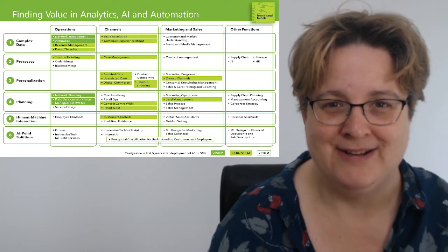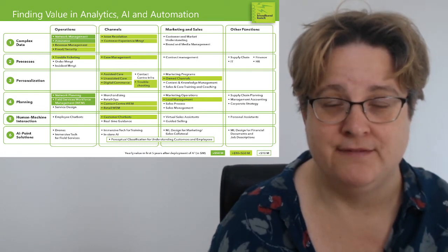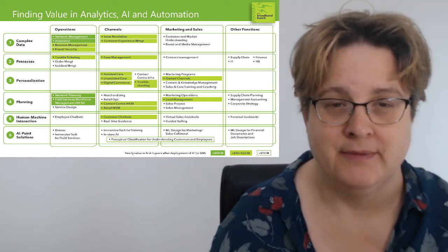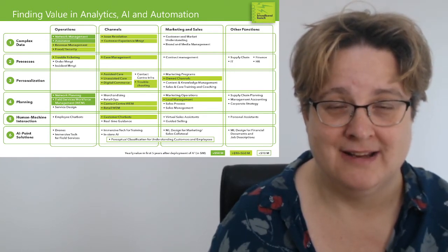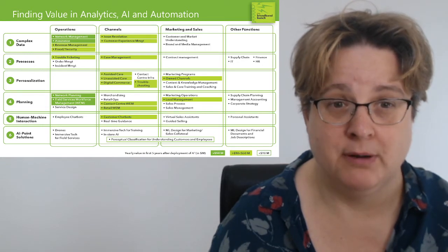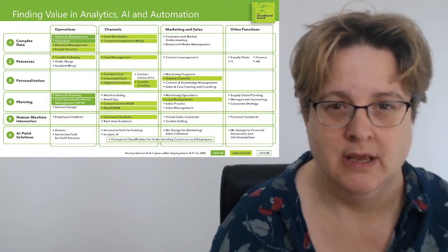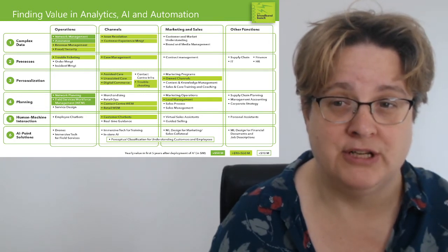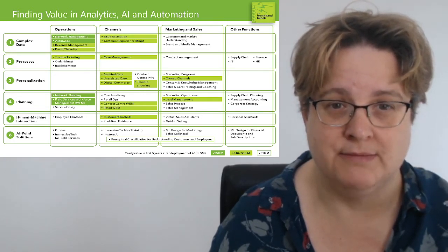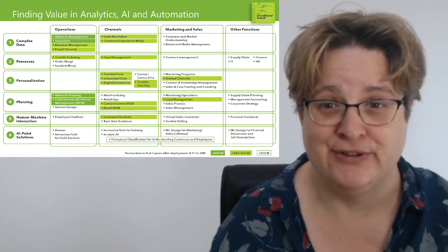Looking at some of the other areas in light green, which are between $10 million and $50 million in yearly value: in the channels column, there are opportunities to better understand customers and employees and the problems they have using analytics and machine learning. The dollar value is less than on the network side because, although many projects create new efficiencies in large teams, the financial value is just not as big as creating efficiencies on the network.